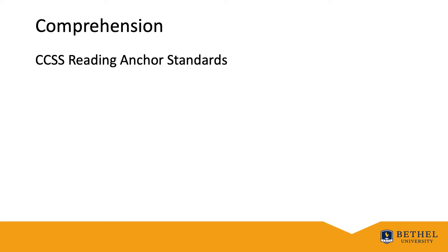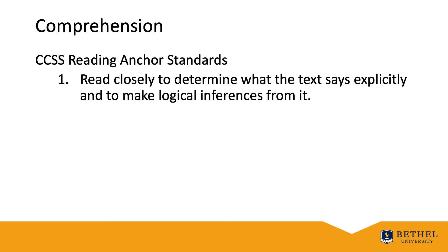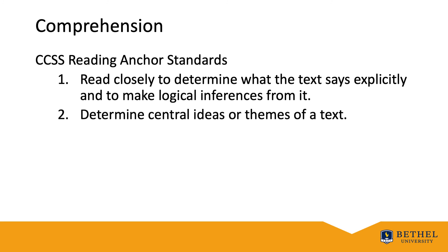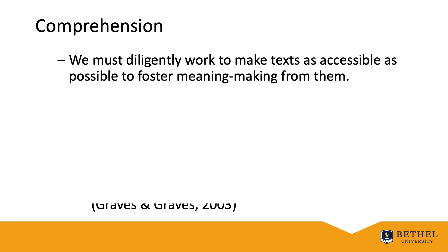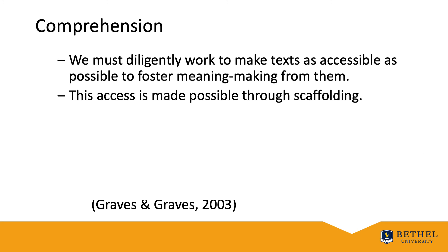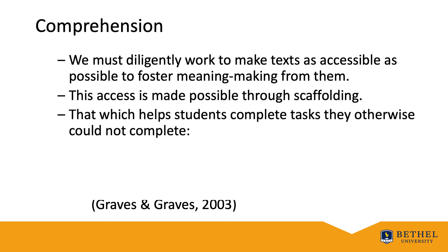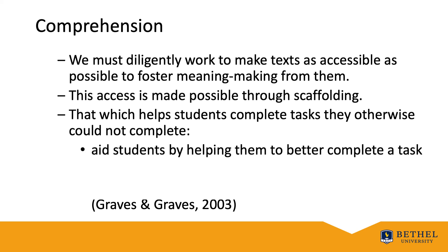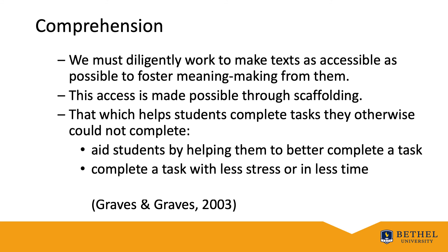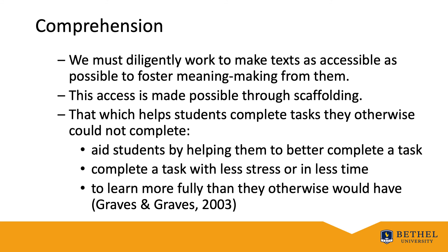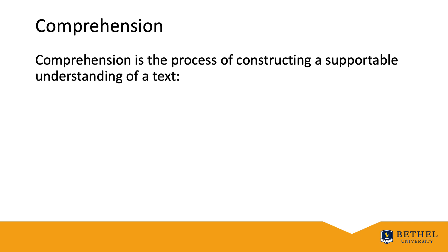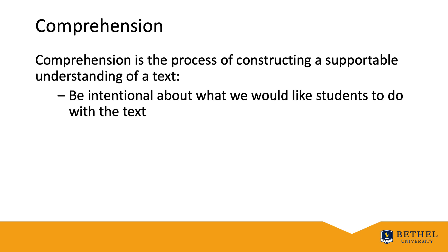The connections readers make lead to mental representations based on the inferences they make from the details found in the text. Readers intentionally engage and ask: what is it I'm looking at here? They search for coherence and a chain of related events, inferring and synthesizing the text's meaning. There are two key standards that speak to this — our reading anchor standards one and two: read closely to determine what the text says explicitly and make logical inferences from it; and determine the central ideas or themes of the text. We must diligently work to make texts as accessible as possible and foster meaning-making from them. This access is made possible through scaffolding — Graves and Graves 2003 defined it as that which helps students complete tasks they otherwise could not complete. See also Vygotsky 1978 and the ZPD.